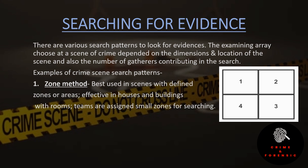Searching for evidence — this is a very important topic and many exam questions come from this topic. There are various search patterns to look for evidence, and these patterns depend on the dimensions and location of the scene, and also the number of searchers contributing in the search. The first method is the zone method: best used in scenes with defined zones or areas, where the scene is divided into different zones and areas.